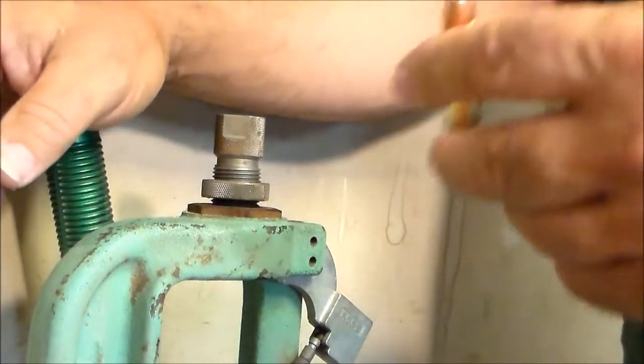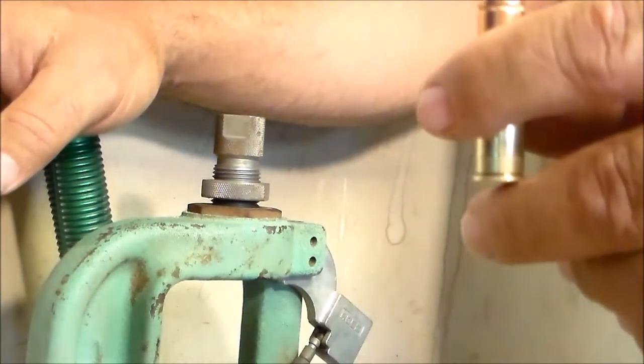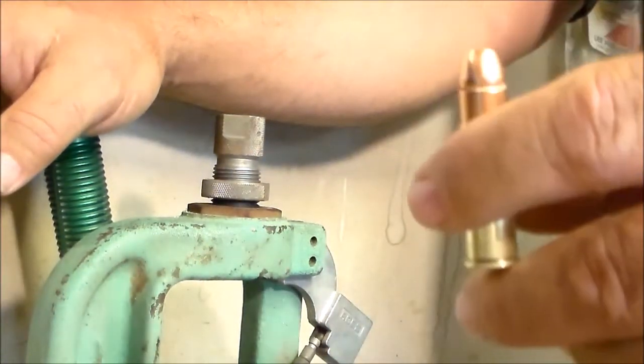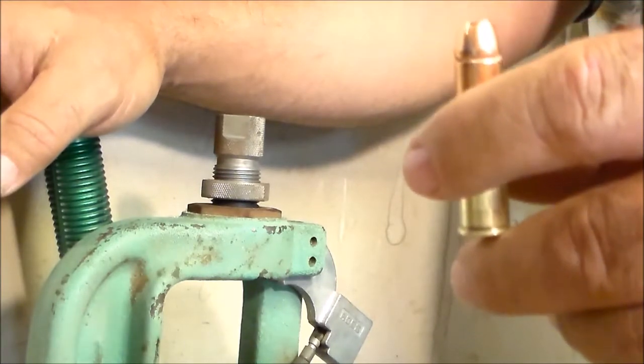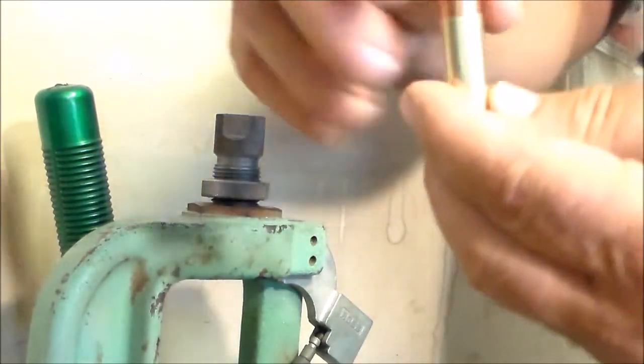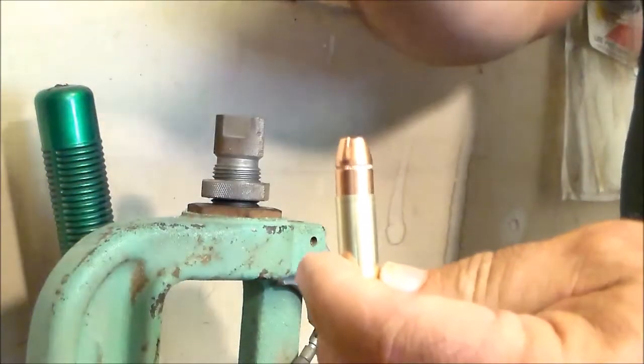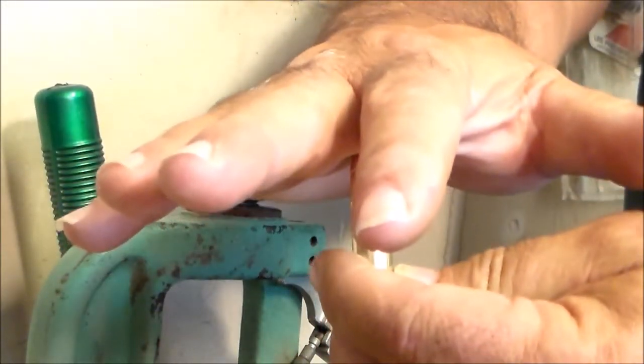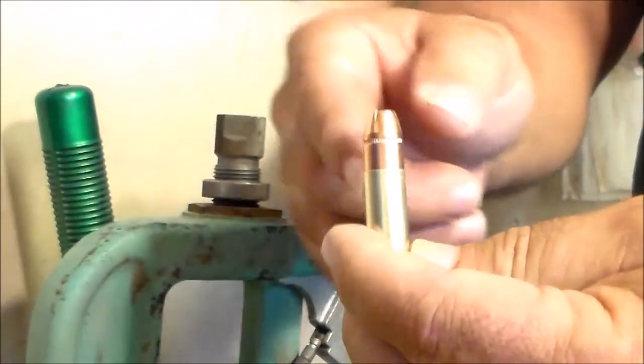We just want enough to run the bullet up into the bullet seating die and have it seat without crimping the brass. Sometimes it'll compress the brass if you don't have the bell wide enough to receive the bullet.